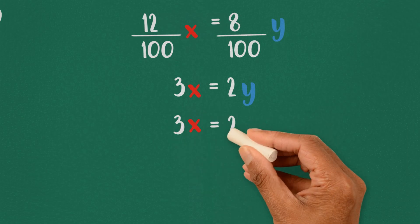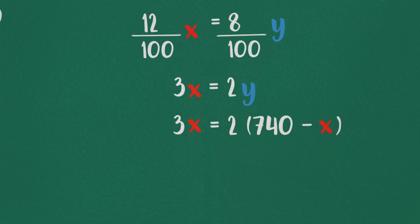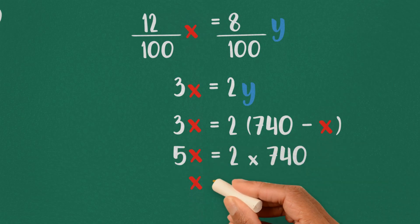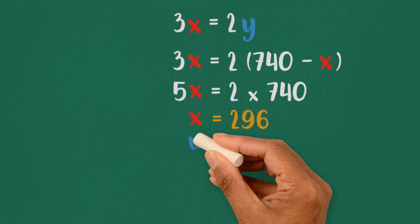Since x and y add up to 740, the value of x can be calculated to be 296, and so y equals 444.